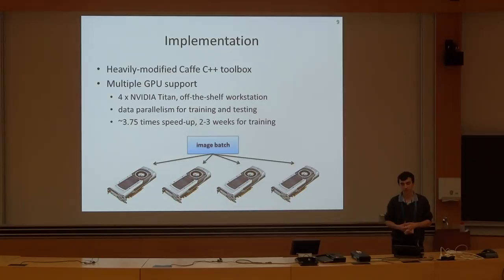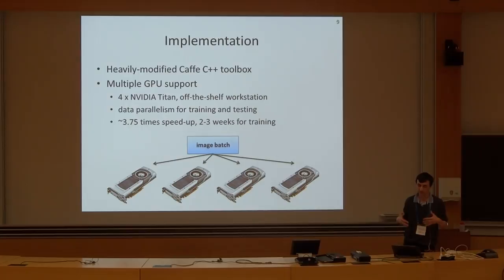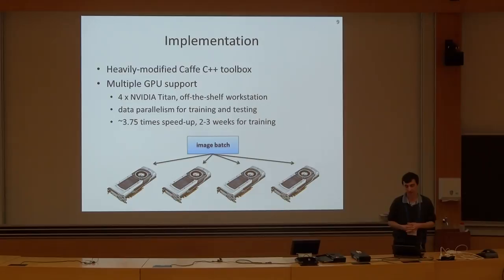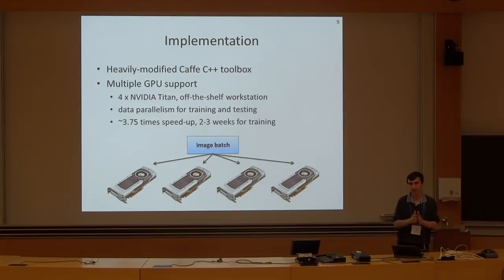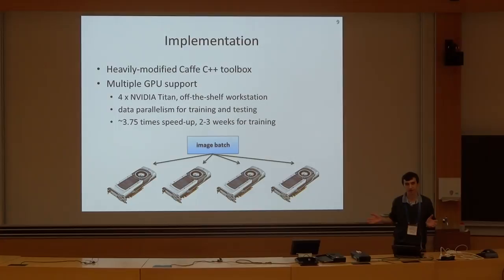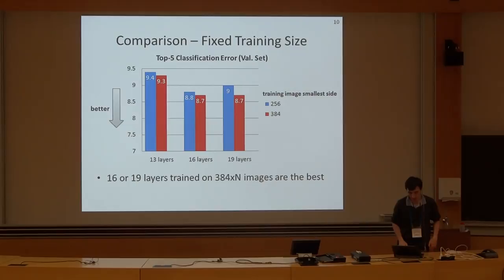In terms of implementation, our framework is a heavily modified Caffe C++ toolbox. We branched from Caffe last year and introduced many changes. The most significant one for this competition was the ability to use multiple GPUs. We used four NVIDIA Titan cards in a single system, exploiting data parallelism — splitting an image batch across the four GPUs — which gave a speedup of about 3.8 times. Training times for our architectures were two to three weeks.